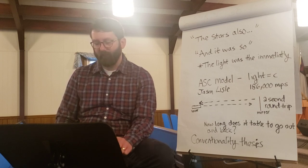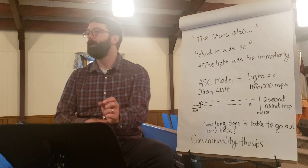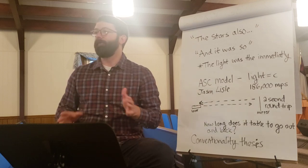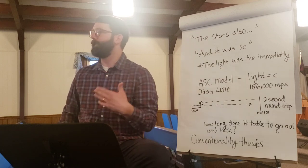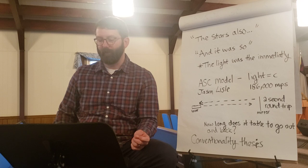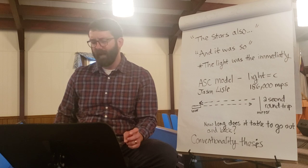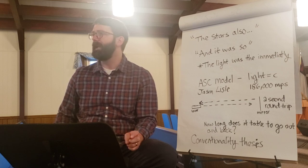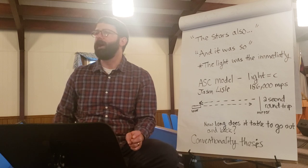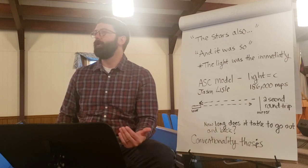Notice what it says in verse 15 of Genesis 1: 'And let them be for lights in the firmament of the heavens, to give light on the earth.' Pause there before the last part. The purpose for the stars and heavenly bodies is to give light on the earth. Now notice the last part of verse 15: 'And it was so.'